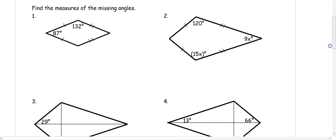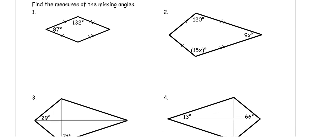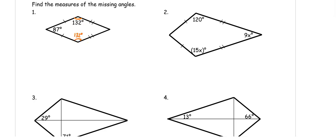Let's use this idea to find some missing angle measures. Notice that 132° is between the two different sized sides, so the other angle across from it is also going to be 132°. To get our last angle measure, we know that any four-sided figure has 360°. So we do 360 minus 132 minus 132 minus 87, and we get 9. So this angle is 9°.